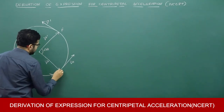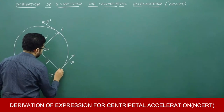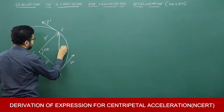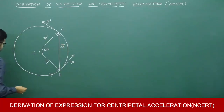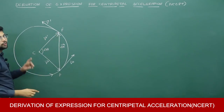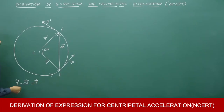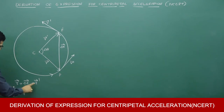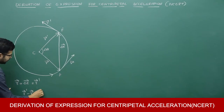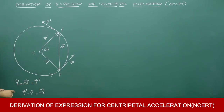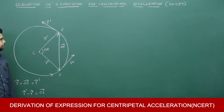Now what is the displacement vector? Initially the particle was at P, finally the particle is at P', so this is the displacement vector delta r. Using the triangle law of vector addition, r and delta r are in order, r' is in the opposite order, so r + delta r = r'. Therefore r' - r = delta r. Final position minus initial position gives you displacement — this is delta r.